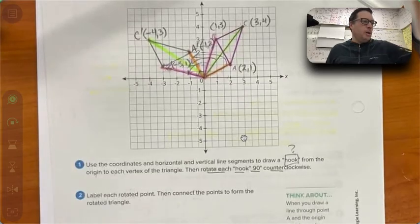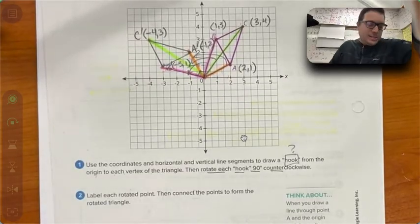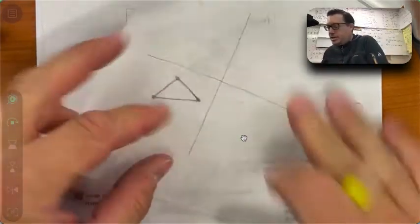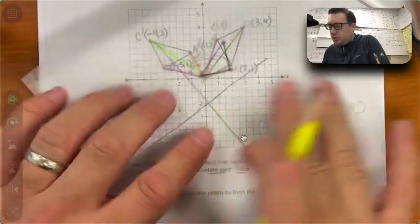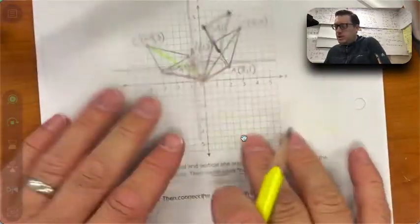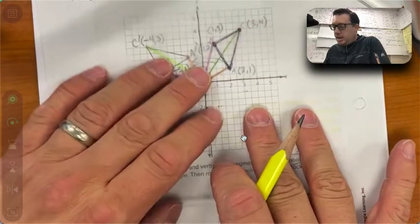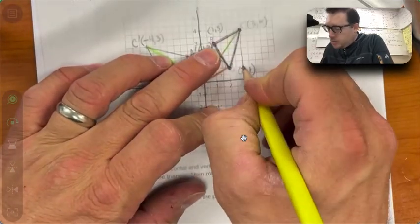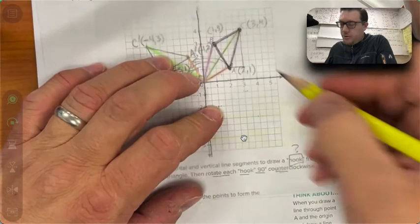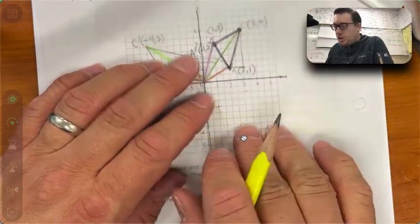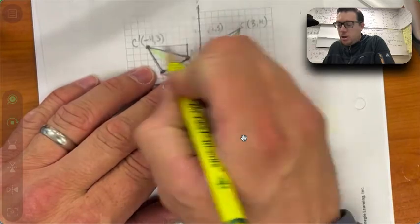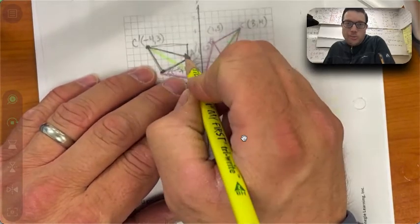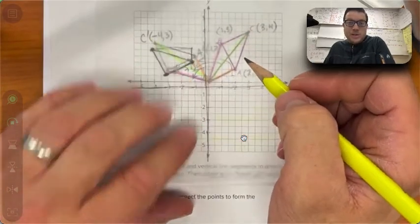If we needed to, a couple ways we could do this is we could trace the original shape, or I could do rise over run in order to figure out the distance of AC. When we do the rotation, it's the same although they're switched. They're the same rise and run, which means they're the same distance.